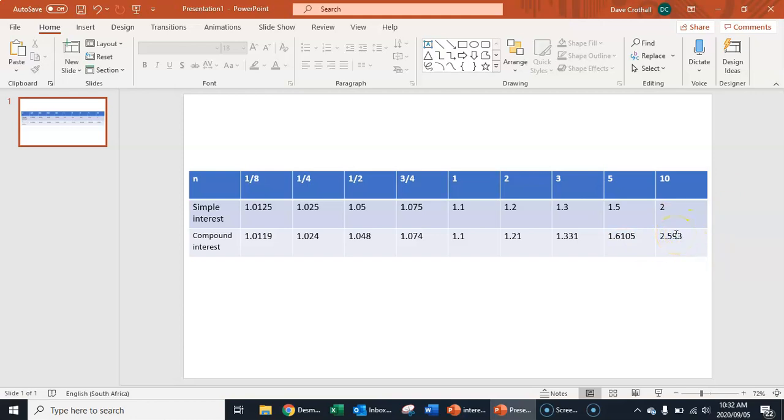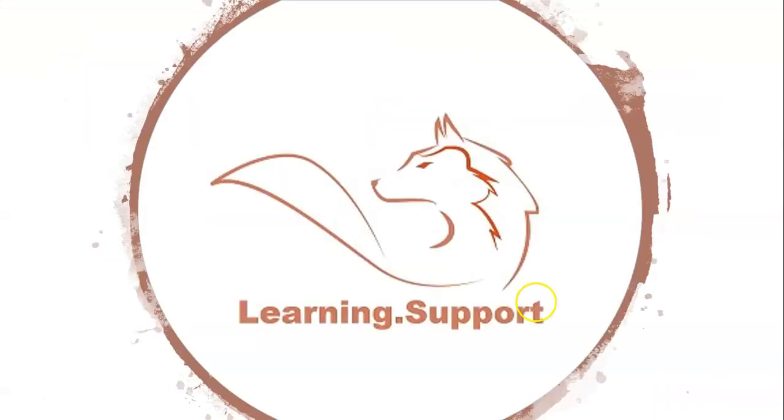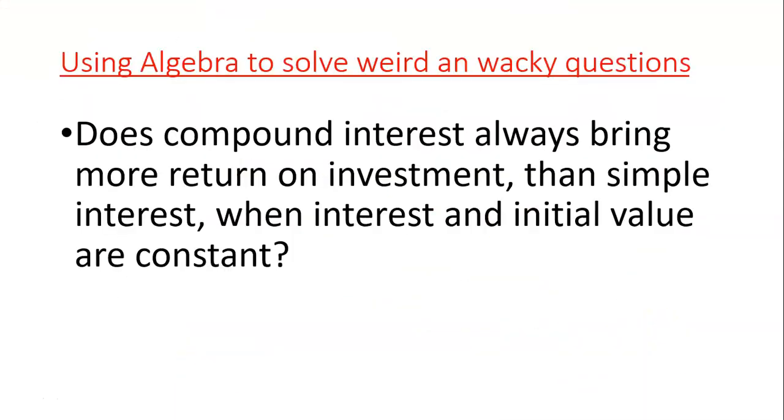So you can see there that over long periods, compound interest definitely gives you more return on investment than simple interest. But over short periods between 0 to 1, it actually does give us, it's actually more beneficial to use simple interest rather than compound interest. So the reason why I say the short answer is no, is that although we have solved this using algebra, we have solved that from 0 to 1 simple interest outcompetes compound interest, this actually doesn't apply to real life. Because most interests are calculated annually. So they only give you the interest once a year.